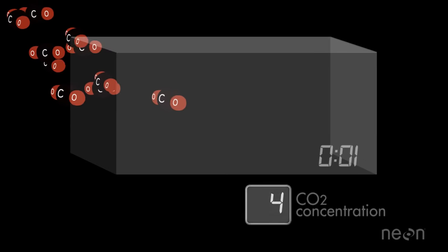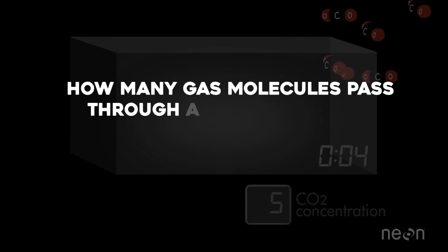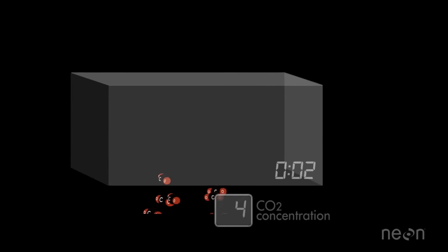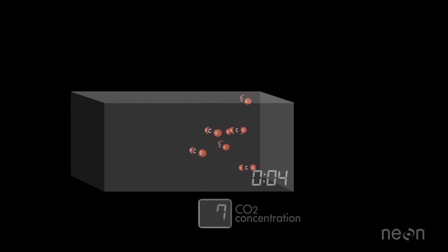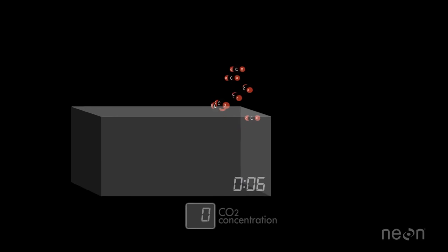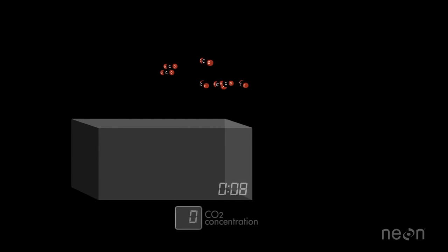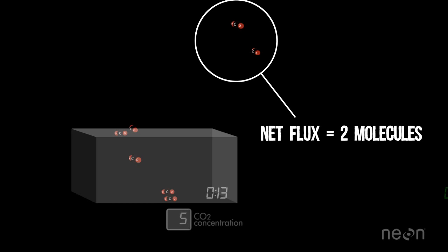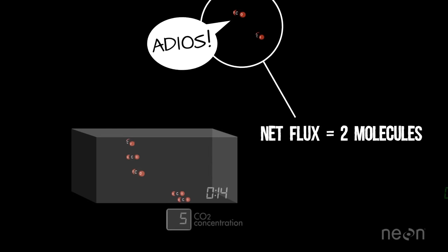To really simplify, the system works by measuring how many gas molecules pass through a defined volume over a specific time. For example, the system might capture a measurement of seven CO2 molecules being carried upward towards the atmosphere by an eddy. Then in the next moment, only five of those molecules are recorded traveling back down towards the ground. Then we know that the net flux over this specific time period is equal to two molecules of CO2 being emitted into the atmosphere.